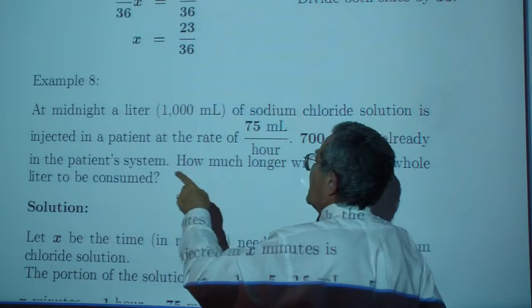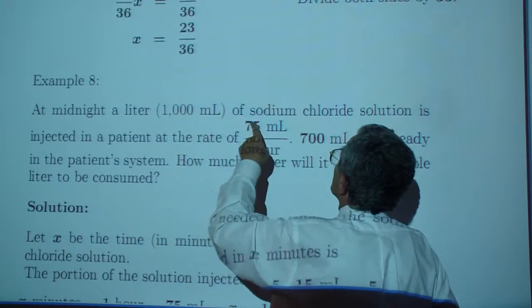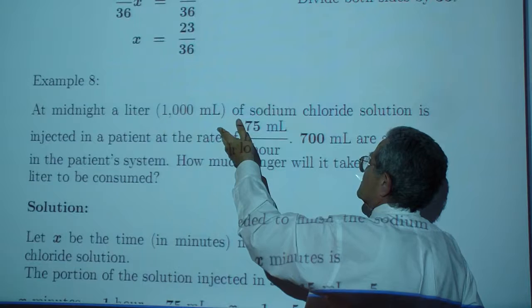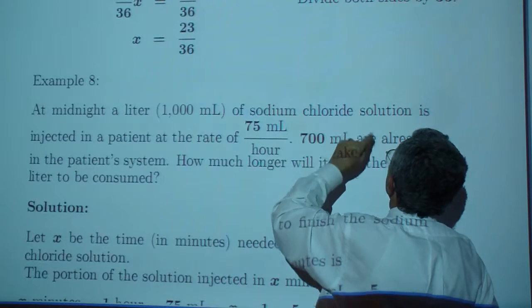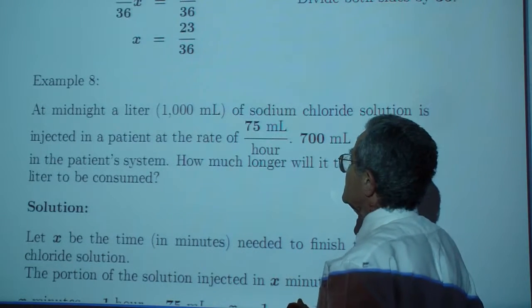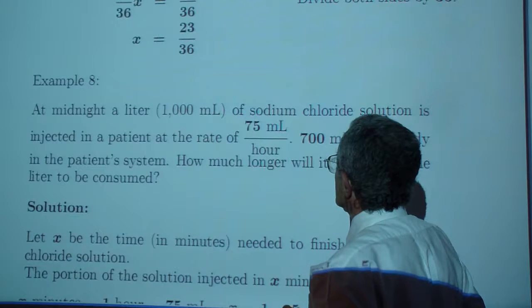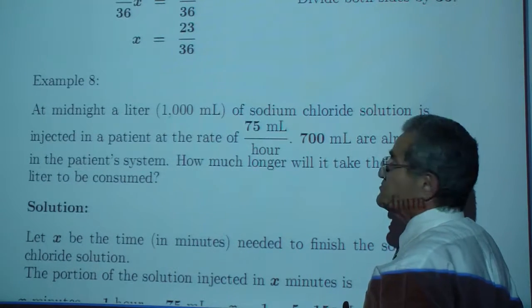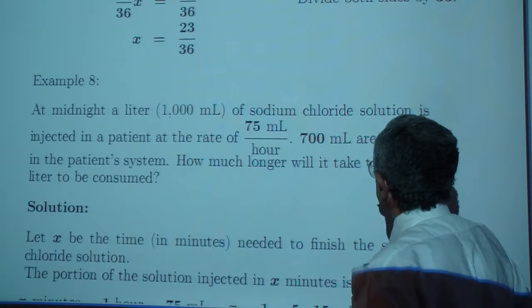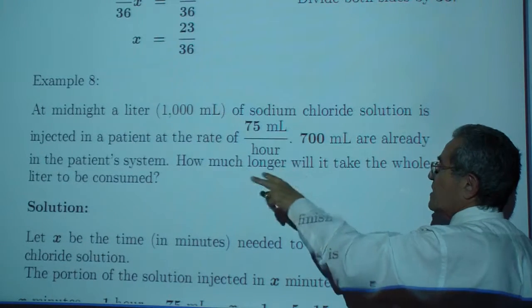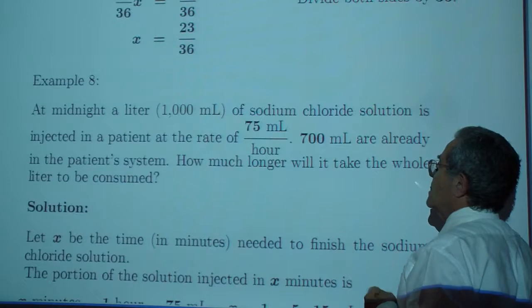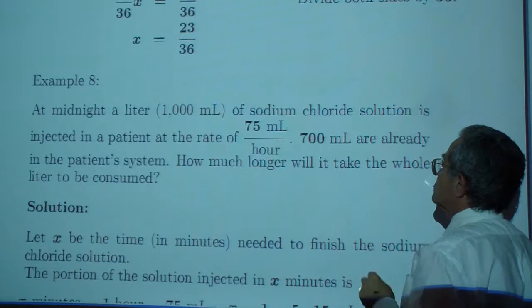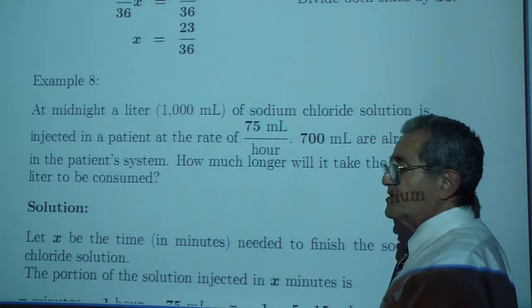Example 8. At midnight, a liter, 1,000 milliliters, of sodium chloride solution is injected into a patient at the rate of 75 milliliters per hour. 700 milliliters are already in the patient's system. How much longer will it take the whole liter to be consumed?